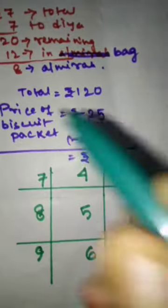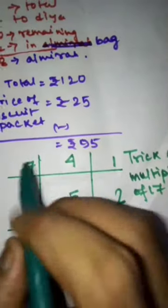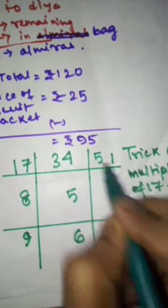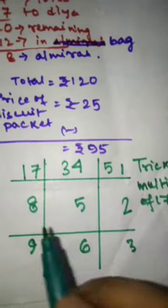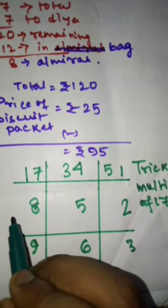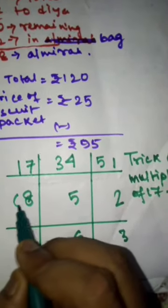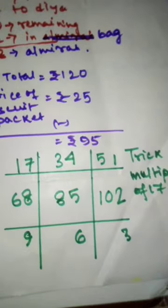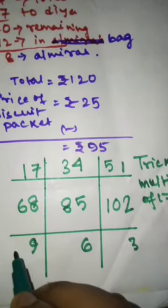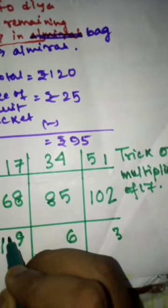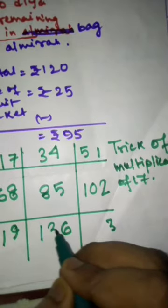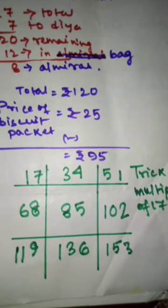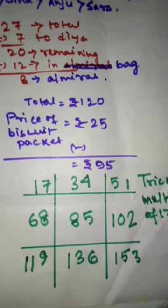For the first row, we will put the odd numbers beginning from 1: 1, 3, 5. Then for the next row, we will put even numbers from 6: 6, 8, 10. And for the third row, we will put again odd numbers beginning from 11. In this way, we will get the tables of 17. Thank you.